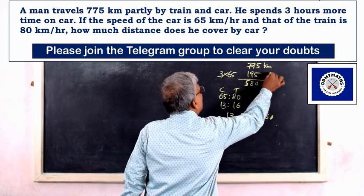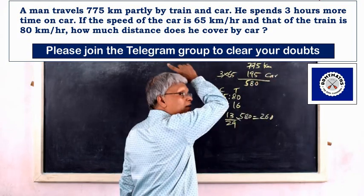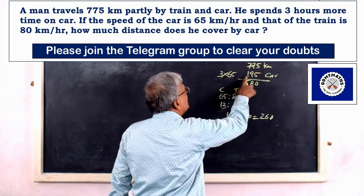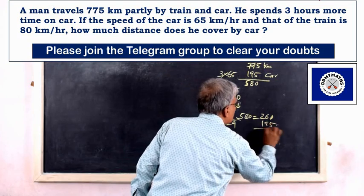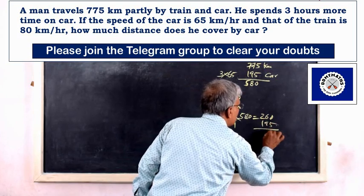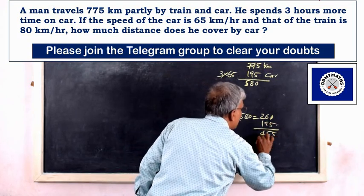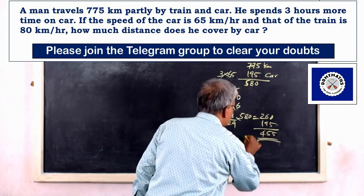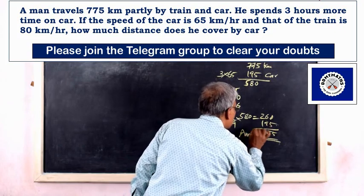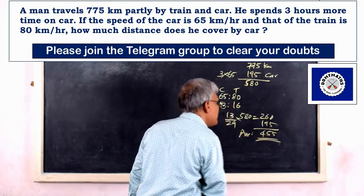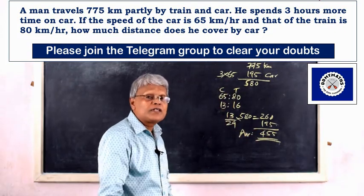The result is 195. The distance covered by car is 195 km, and by train is 455 km. So our answer is 455 km for the train.